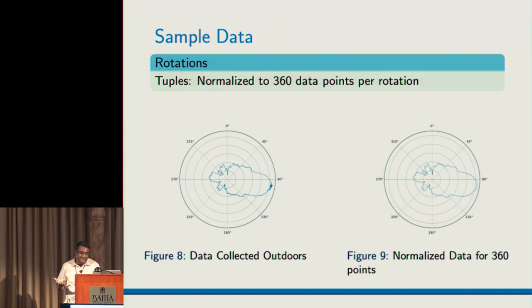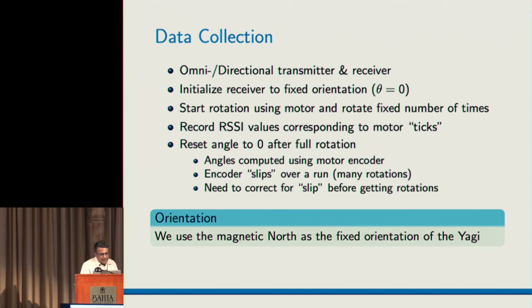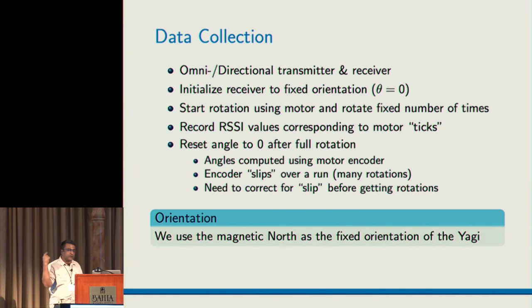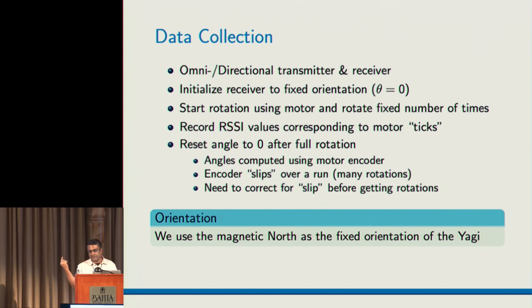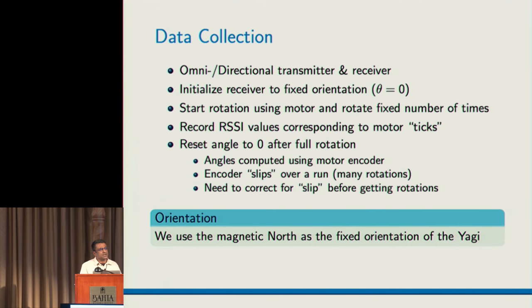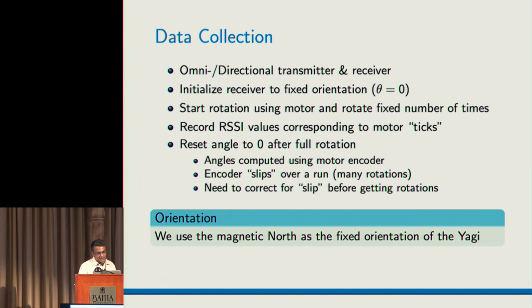The nicest data we had was collected outdoors in a parking lot, and it shows that it captures the directionality to some extent. Data collection was done both indoors and outdoors. We used a compass for initializing the receiver and let it rotate a couple of times. For every rotation we collected the angle and power for all 360 values as it goes around, then reset the angle to zero. That gave us about 1,400 data points total, collected at several locations indoors and outdoors.